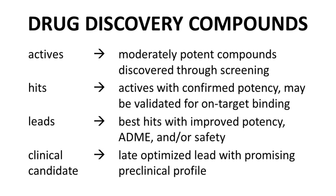Let's review the types of compounds that lie along the path of the drug discovery process. We will discuss all these compounds in greater detail in later parts of the course, but this is just a quick overview for now. First, we have actives — compounds that show decent potency during the screening of large collections of molecules with in vitro assays. Actives undergo additional testing.